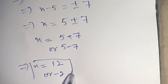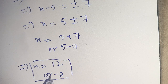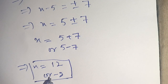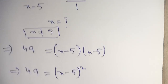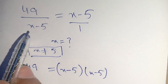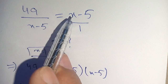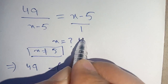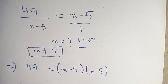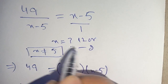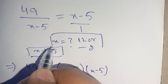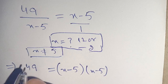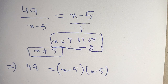Thus x is equal to 12 or x is equal to minus 2, which satisfy our equation 49 divided by x minus 5 is equal to x minus 5. If you are new here, make sure to subscribe to our channel for more informative videos. Till then, bye bye.